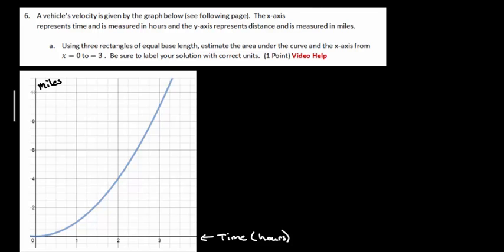Now what we're asked to do is, using three rectangles of equal base length, we're going to estimate the area under the curve from zero to three. So we want from here to here the area under the curve. Well what does that look like? Let me block this area off for you so that you can see we want all of this area. That's what we're looking for.